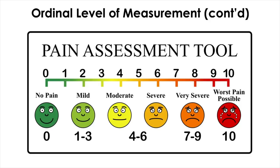Another example of ordinal level of measurement is a pain scale. This was devised to help people quickly point out the current pain level they are experiencing instead of having to explain their pain. The degree of pain we feel is quite subjective and very hard to objectively quantify, as you are the only one who really knows how bad your pain feels. The pain scale is ordered in increasing order from left to right, but we do not know if the difference in pain between no pain and mild is necessarily the same as between moderate and severe.